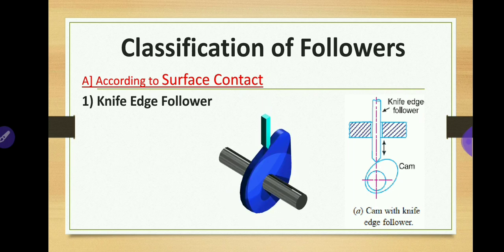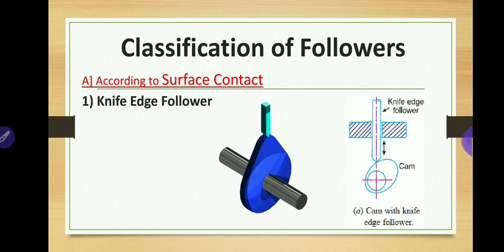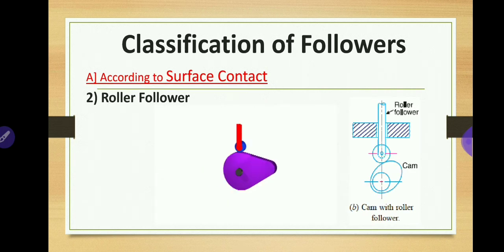In the knife edge follower, a considerable side thrust also exists between the follower and guides, which is another reason they are less used.